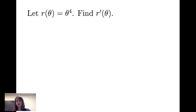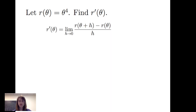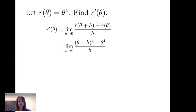Before we state the power rule, let's go through an example of a sample power function. Let r of theta equal theta to the fourth power. We'll first take a look at this using the limit definition of a derivative: the limit as h goes to 0 of r evaluated at theta plus h minus r evaluated at theta divided by h. We will evaluate the function at theta plus h, then at theta, find the difference in the numerator, divide by h, and take the limit as h goes to 0.